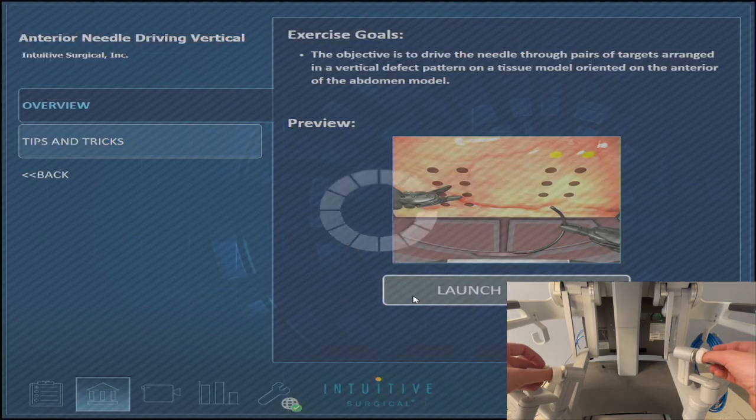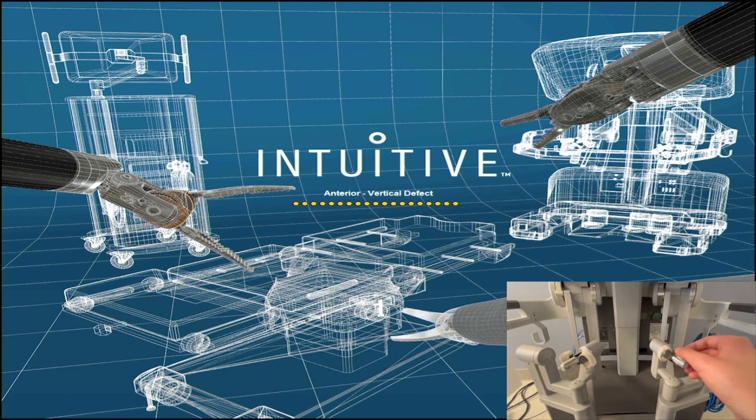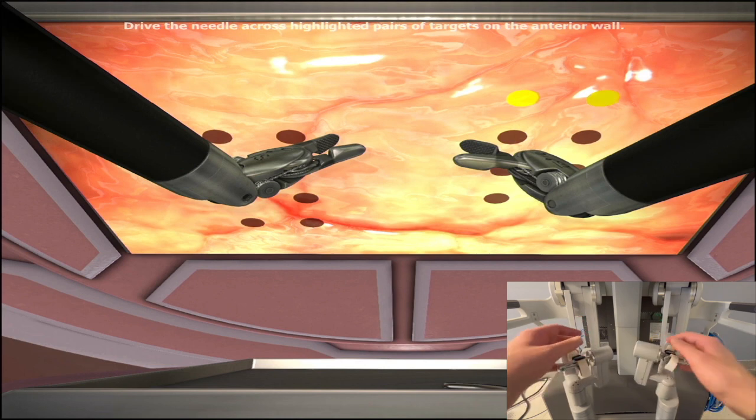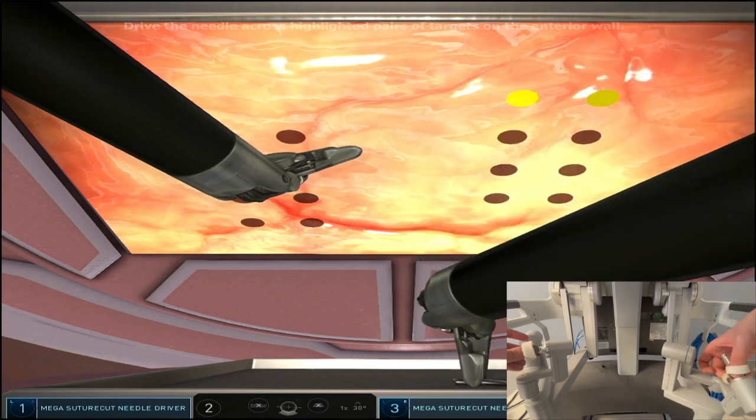Hello everyone, this is a video tutorial on the anterior needle driving vertical exercise on the robot. Similar to the horizontal variation, we're going to be taking bites sequentially using alternate hands.